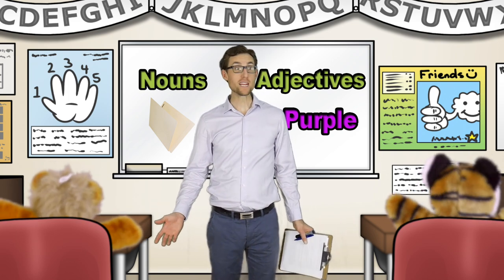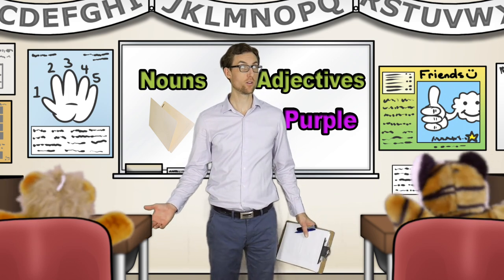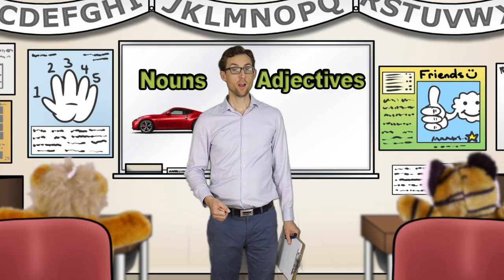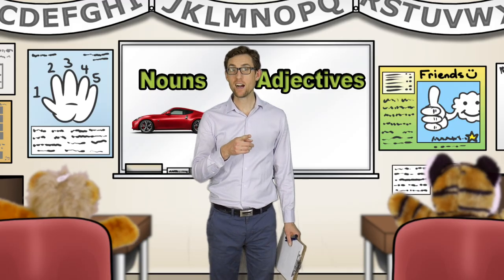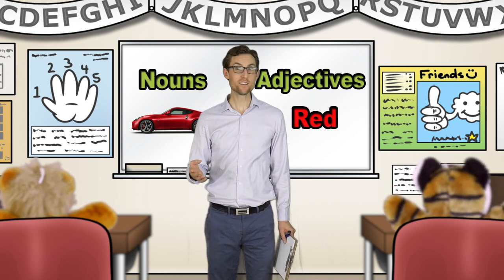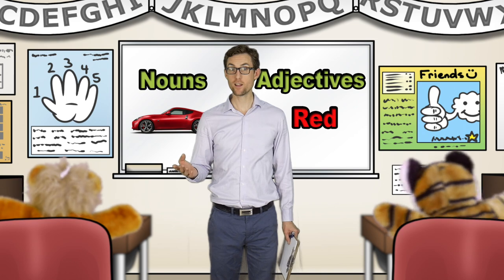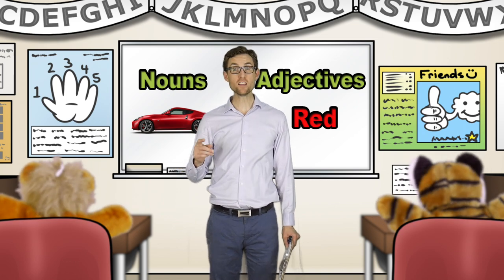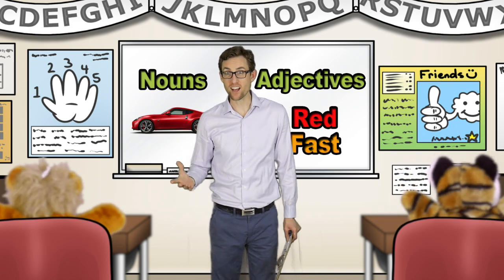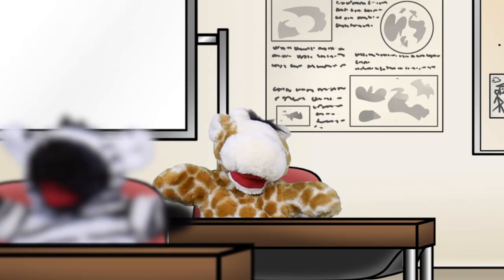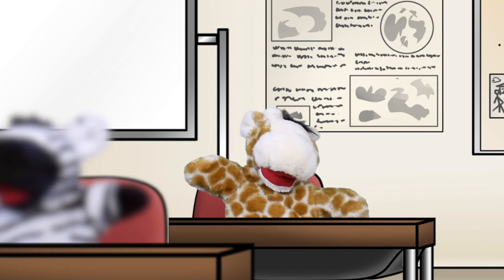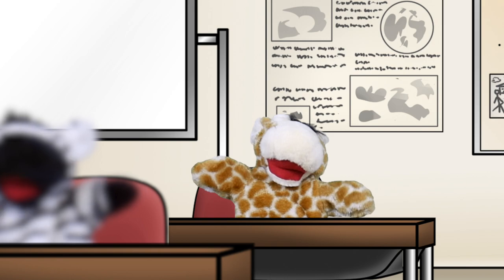Okay, tell me a noun. A car. The car is red. The car is red. And the car is fast. The car is fast. A noun can have two adjectives. That's right, Gordon. Very good.